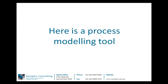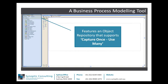Let's consider a process modelling tool. This is an example of a tool, and the first thing that makes it different is that it is supported by a database — it has an object repository. You can see the different classification folders for the different drawing objects: steps, roles, decisions, and all those kinds of things, which supports the feature of 'capture once, use many.' So once you've captured an object, you can reuse it many times.